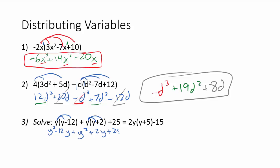And then I'll bring down my plus 25 equals. We're going to distribute this in. This would be 2y squared plus 10y. And then I'm going to bring down the minus 15. Now it's time to combine some like terms here. So I've got a 2y squared over here. I've got,